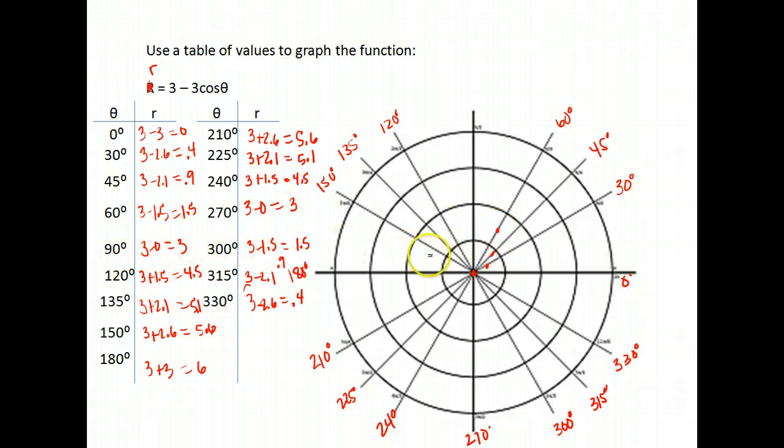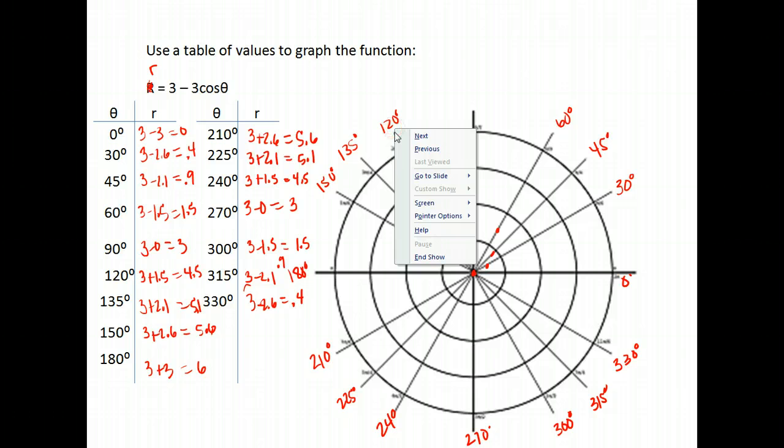90 degrees and 3 so up at 90 I go up to 1, 2, 3. 120 I go to 4.5 so I've opened up to the 120, I go up to 1, 2, 3, 4, and a half clear out here.